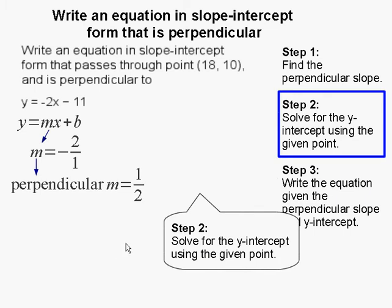Step 2: Solve for the y-intercept given the point. I'm going to start with my slope-intercept equation and substitute in the slope and the given point to solve for b.